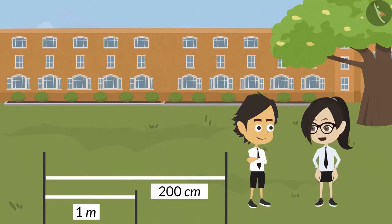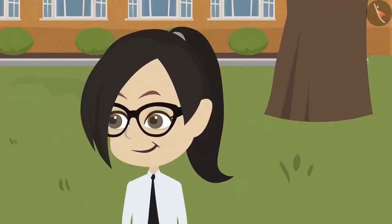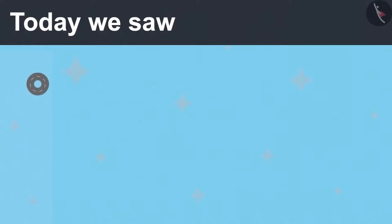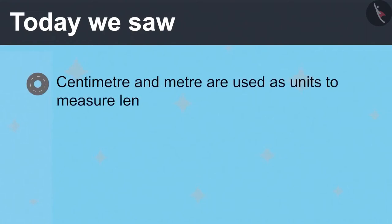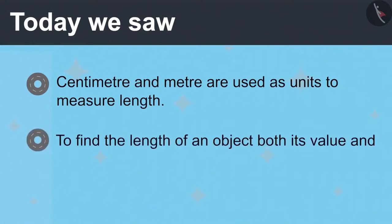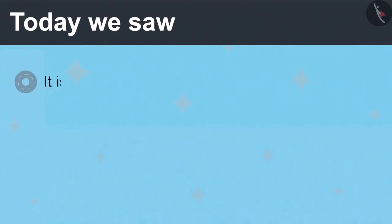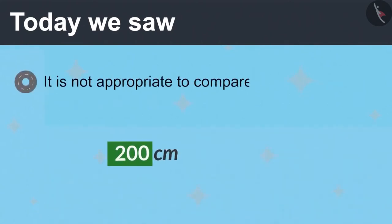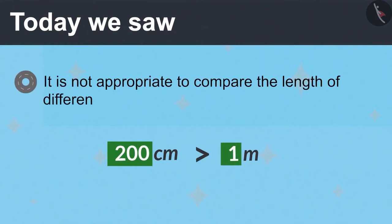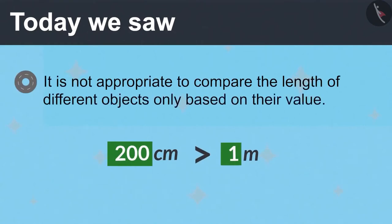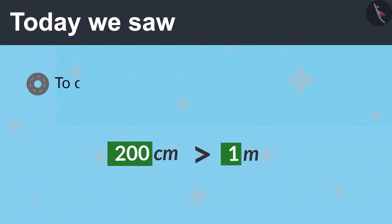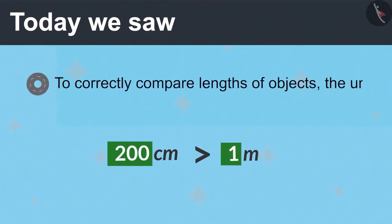Now I have understood completely. What did you understand? Centimeter and meter are used as units to measure length. To find the length of an object, both its value and unit of measurement are required. And it is not appropriate to compare the lengths of different objects only based on their value. To correctly compare lengths of objects, the units of both should be made the same.